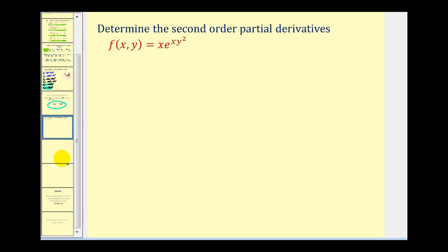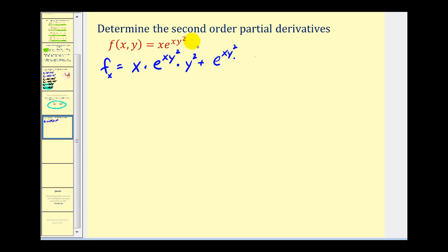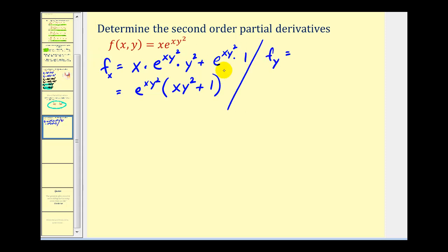Let's look at one more example that's a bit more involved. We start by determining the first order partial derivatives. The first partial with respect to x requires the product rule: x times the derivative of e^(xy²), which gives e^(xy²) times y² (treating y as a constant), plus e^(xy²) times 1. Factoring out the exponential, we get e^(xy²)(xy² + 1). For the first partial with respect to y, treating x as a constant: x·e^(xy²) times the derivative of the exponent with respect to y, which is 2xy, giving us 2x²y·e^(xy²).